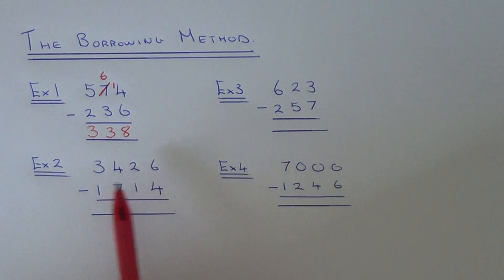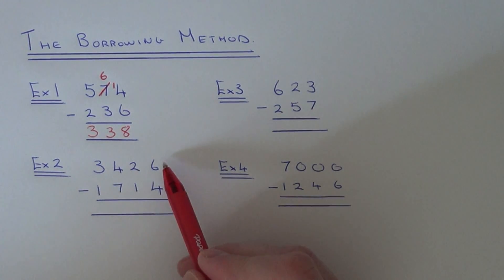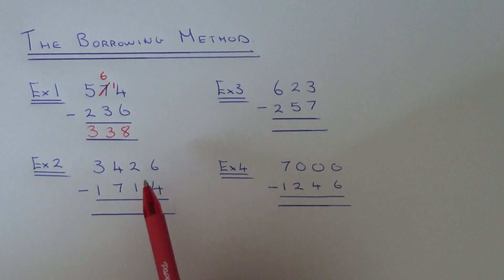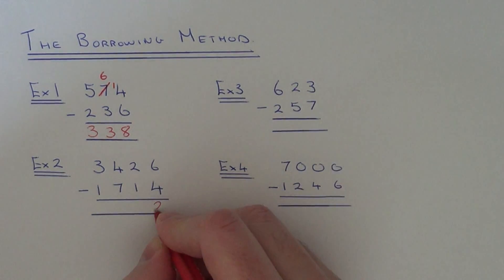So let's move on to example 2. This time you have 3,426 minus 1,714. Start on your right hand side again, so 6 take away 4—you can do that—that is 2. Then 2 take away 1, which is 1.